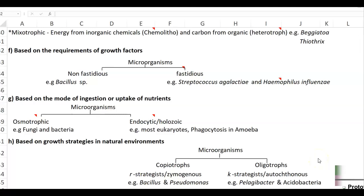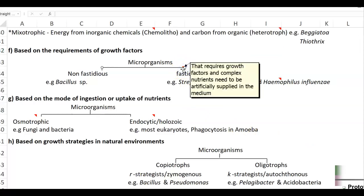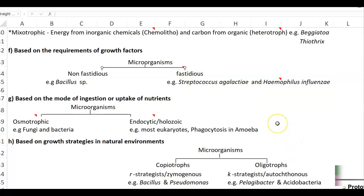The next classification is based on the requirement of growth factors, mainly referring to vitamin requirements. Microorganisms are divided into non-fastidious, for example Bacillus, and fastidious organisms. Fastidious organisms require growth factors and complex nutrients that must be artificially supplied in the growth medium.